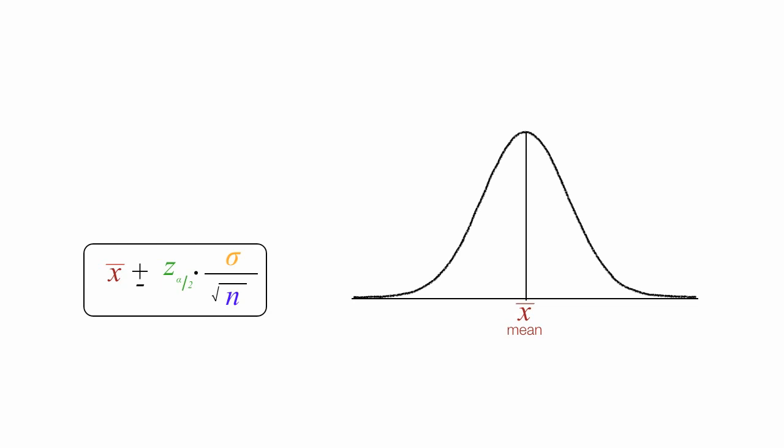The whole thing here is called the confidence interval, and the items to the right of the plus and minus sign is referred to as the margin of error, and I'll discuss those in some detail.